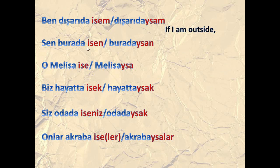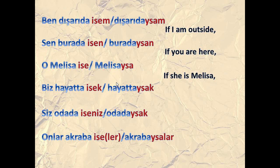Sen buradaisen or buradaysan means 'if you are here.' O melisa ise or melisa ise means 'if she is Melisa.' Biz hayatta isek — hayatta means 'in life,' it means 'alive' — so 'if we are alive.' Siz odada iseniz or odada iseniz — 'if you are in the room.' Onlar akraba ise — 'if they are relatives.'